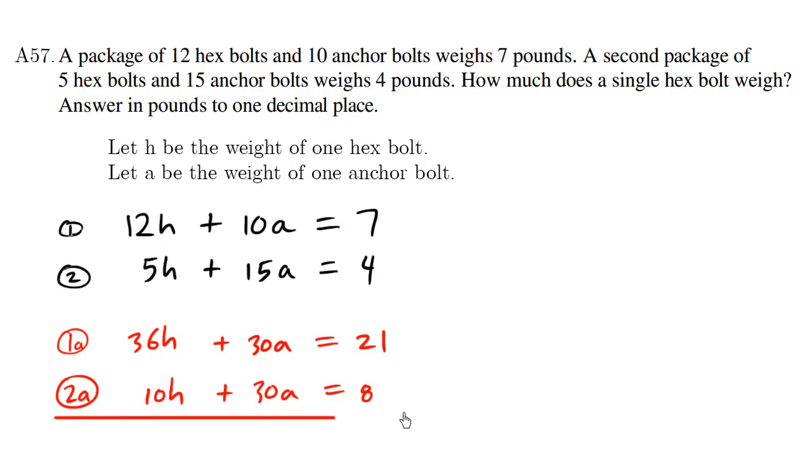So once I'm here, I'm going to subtract to eliminate the A's. 21 minus 8 is 13. 30A minus 30A is 0. It disappears. And 36H minus 10H is 26H. So I have 26H equals 13.